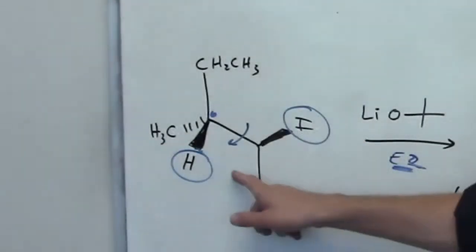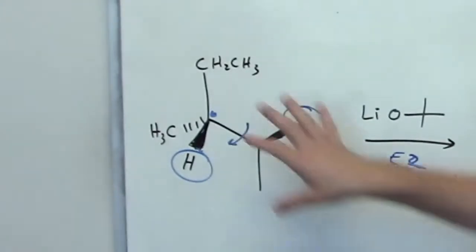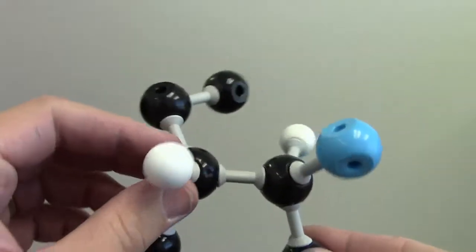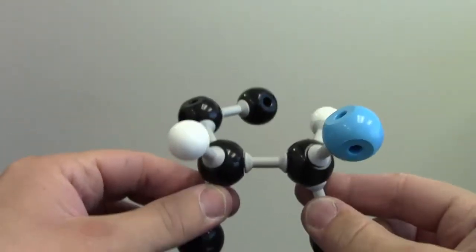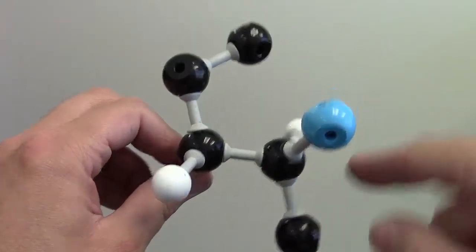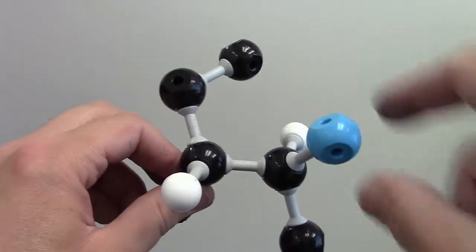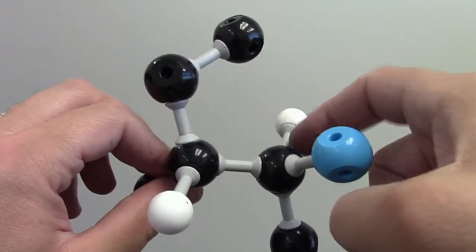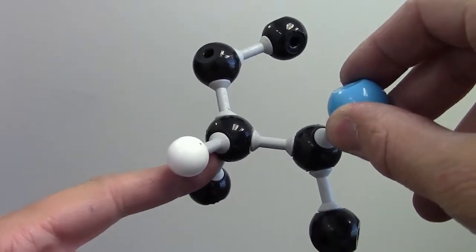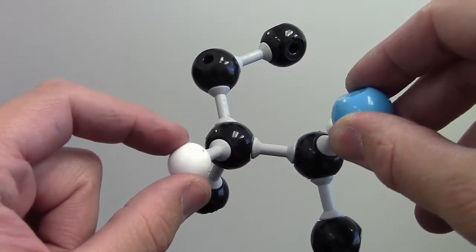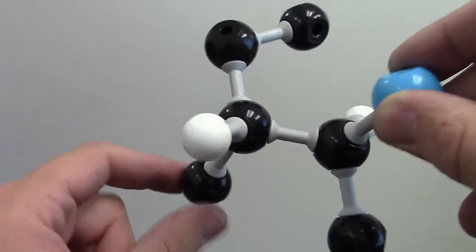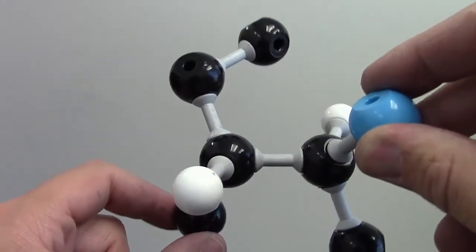Now let's look at the second example. As with the previous one, we'll use a physical model to see it more clearly. Here's the model of the second molecule. The ethyl group is up top, the methyl is pointing down, and the iodine is still pointing toward us as drawn with a wedged bond. This hydrogen is pointing away from us, drawn with a dashed bond. The key difference is the configuration of this stereocenter: in this example, the hydrogen is on the end of a wedged bond and the methyl is on a dashed bond, meaning the hydrogen points toward us and the methyl points away — the opposite of the previous example.